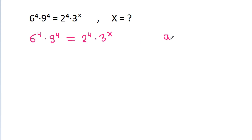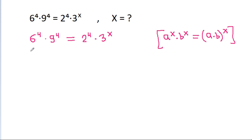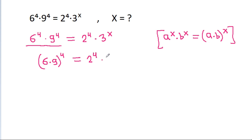Since a power x times b power x is equal to (a times b) power x, so 6 power 4 times 9 power 4 becomes (6 times 9) power 4, that is equal to 2 power 4 times 3 power x.